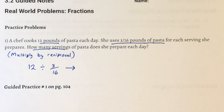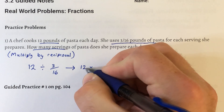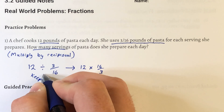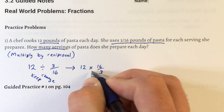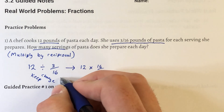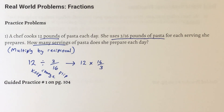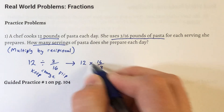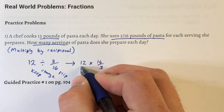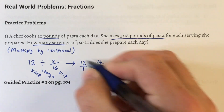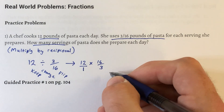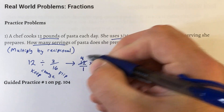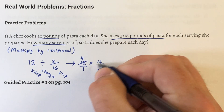So this problem turns into 12 times 16/3. We keep that first number, change the division to multiplication, and take the reciprocal of the second number — we flip that second number. Now we are going to look for cross-canceling shortcuts. We put the whole number over 1. Looking diagonally at 12 and 3: do they have common factors? Yes, 3. Three goes into 3 once, and 3 goes into 12 four times. So we simplify those. One and 16 don't share common factors, so those stay as they are.